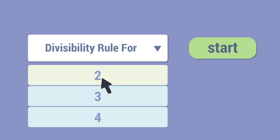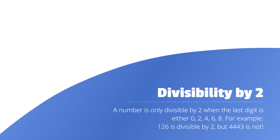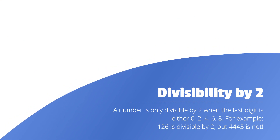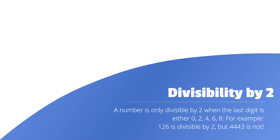Let's now look at the divisibility rule for 2. A number is only divisible by 2 when the last digit is either 0, 2, 4, 6, or 8. For example, 126 is divisible by 2 because the last digit is 6, which is even. But 4,443 is not divisible by 2 because the last digit is 3, which is not divisible by 2.